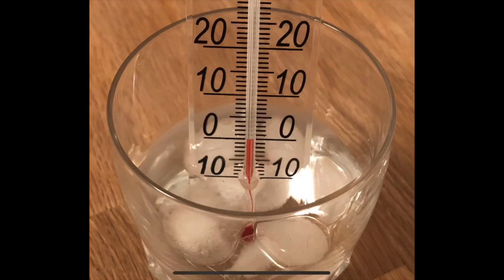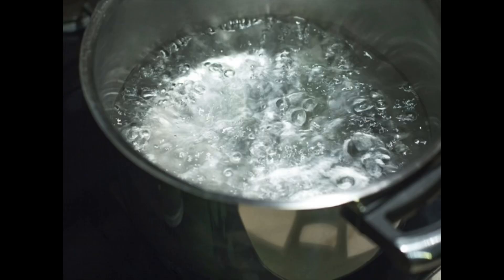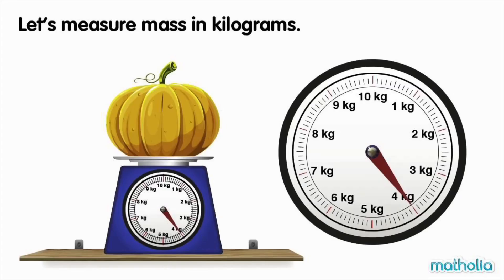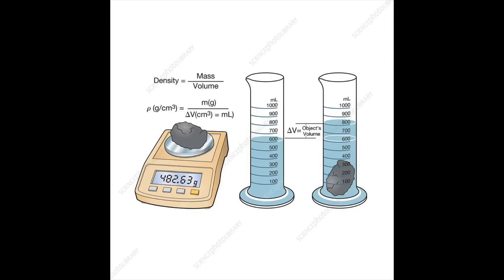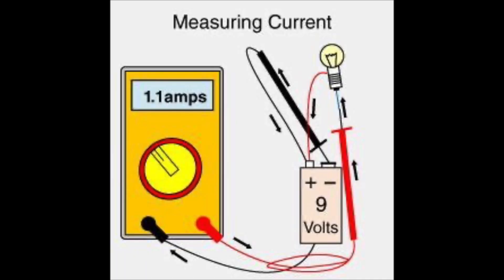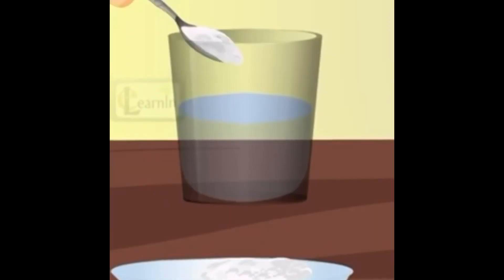Examples of physical properties include melting point, boiling point, mass, color, density, electric current, and solubility.